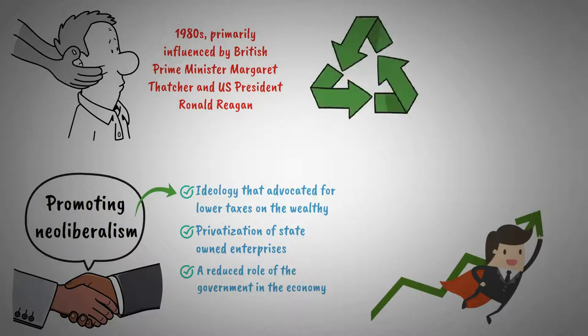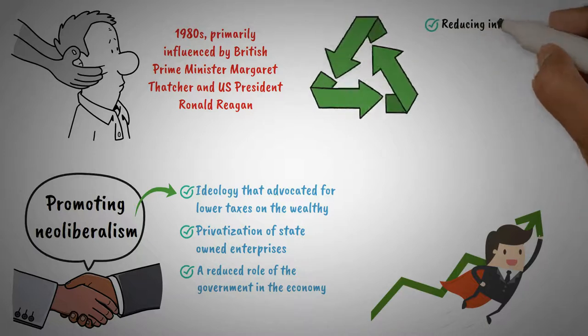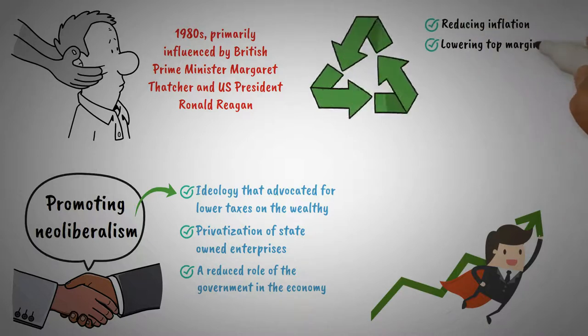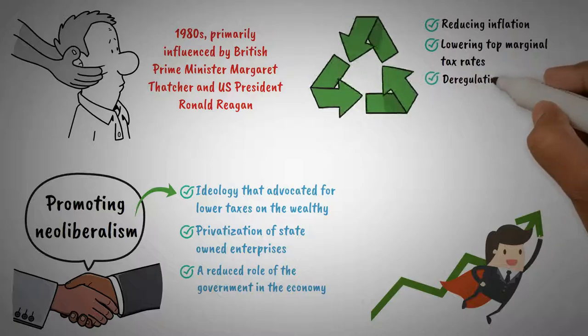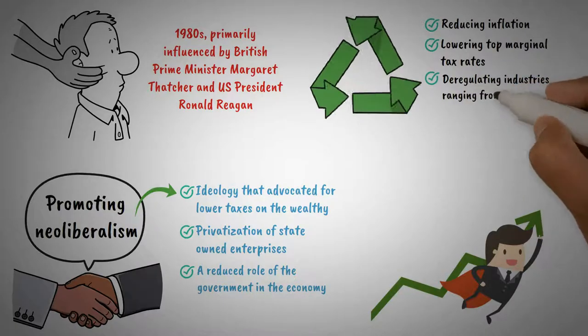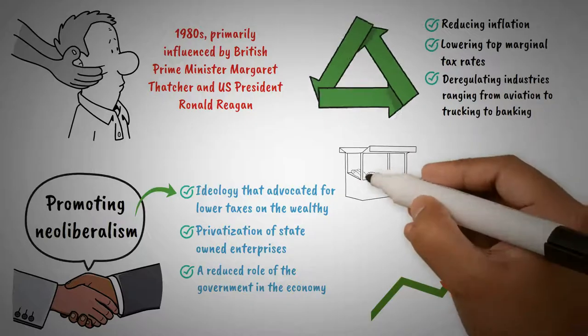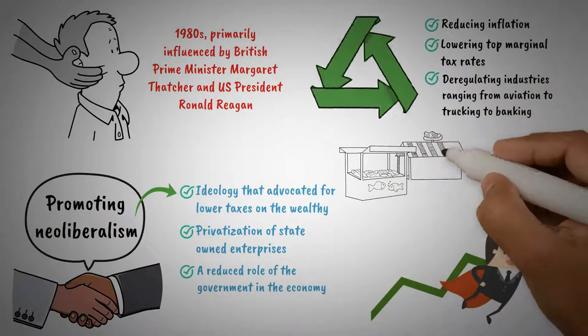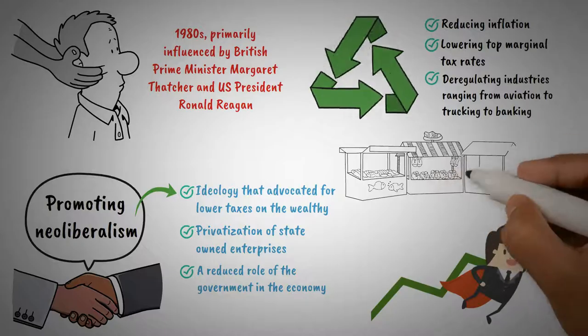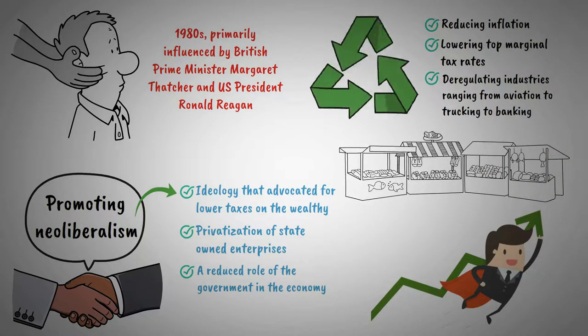Thatcher and Reagan implemented substantial changes in their respective countries, such as reducing inflation, lowering top marginal tax rates, and deregulating industries ranging from aviation to trucking to banking. These policies reshaped the economic landscape and established free market capitalism as the dominant economic model.